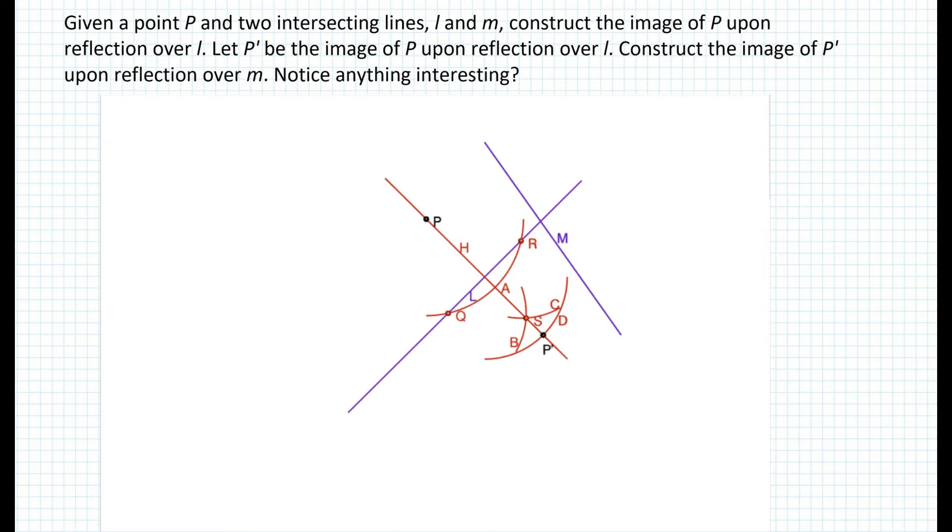Now we repeat this entire process by constructing a reflection of P prime over line M. So again, we construct a perpendicular from P to line M, as you can see here.